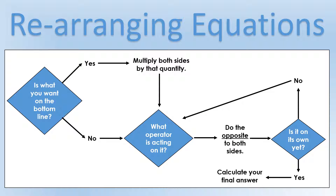I've summarized this into a flow diagram. First, ask: is the quantity you want on the bottom line? If yes, multiply both sides by that quantity. If no, skip to the next step. Ask what operator is acting on it, and do the opposite to both sides. Then ask: is it on its own yet? If not, repeat that step until it is. Once it is, calculate your final answer. This summarizes the process.